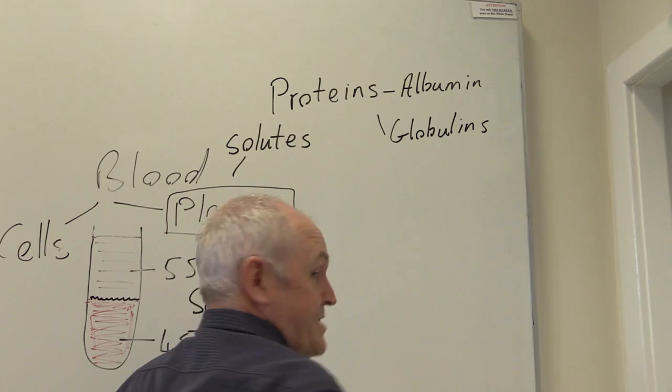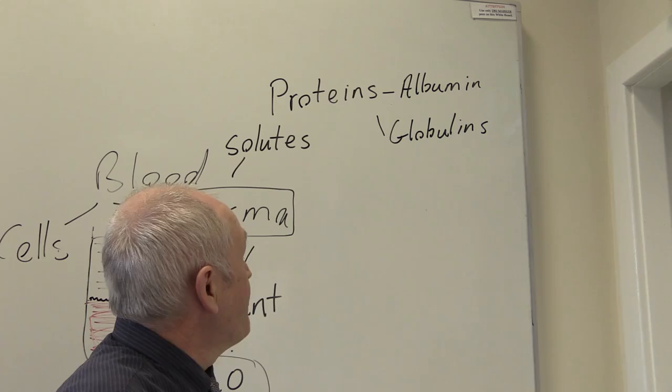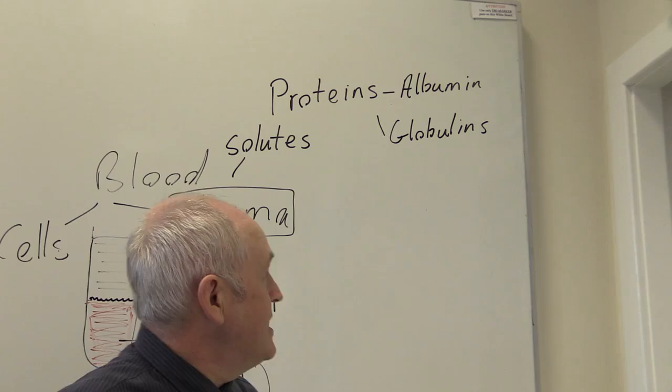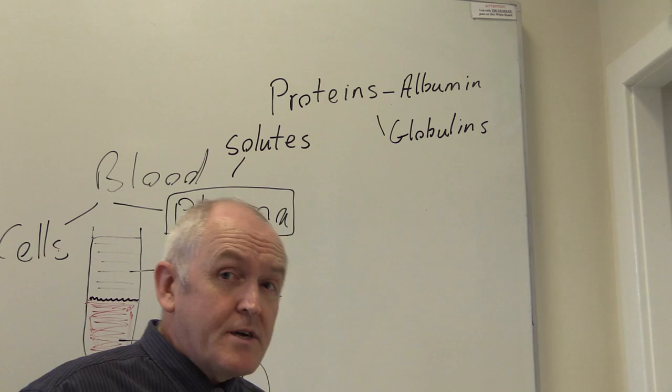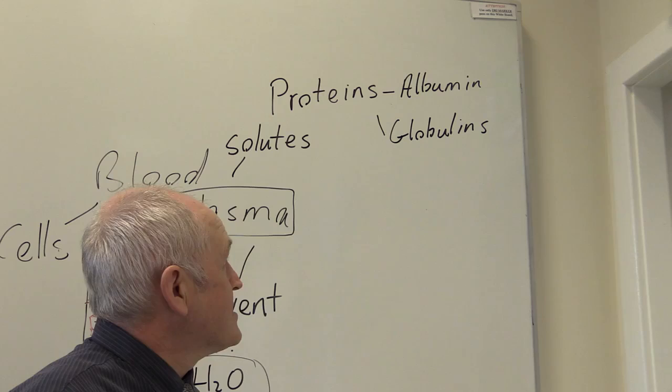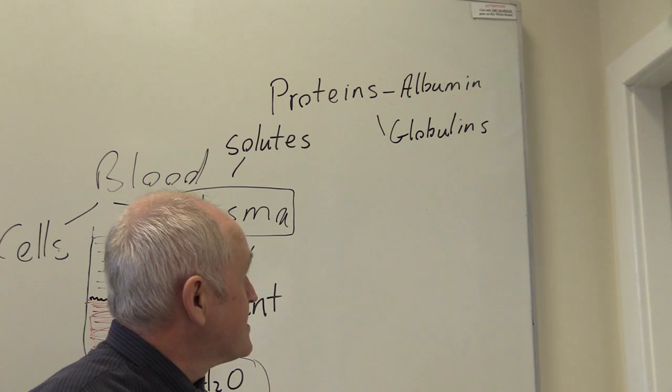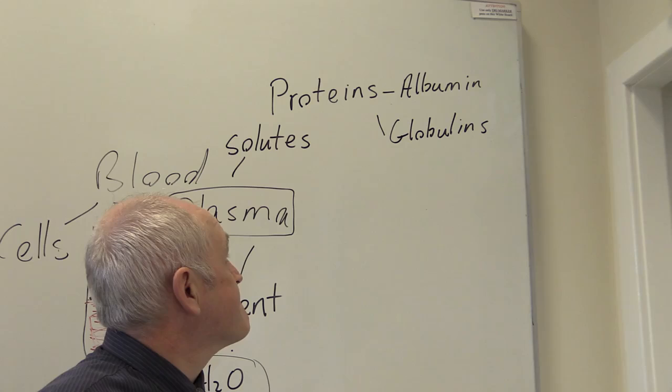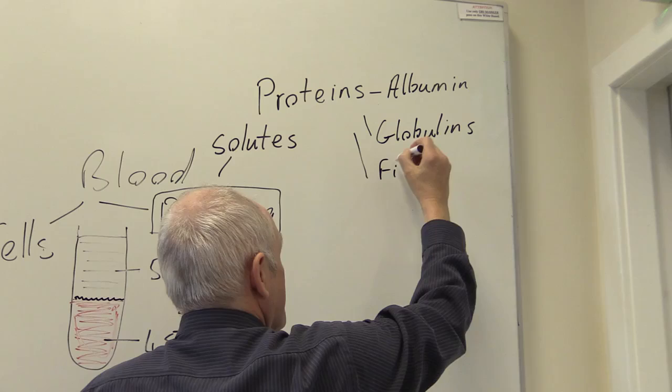Then there are globulins — proteins that are globular in nature. Like albumin, some globulins are made in the liver, but other components of the globulins — the immunoglobulins — are actually made by white cells, the lymphocytes, because the immunoglobulin component of the globulins are the immune proteins giving the body specific acquired immunity. Another protein we could mention is fibrinogen.